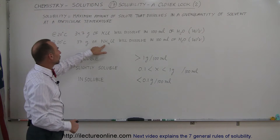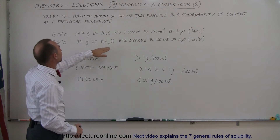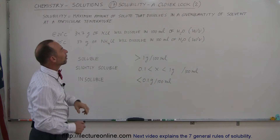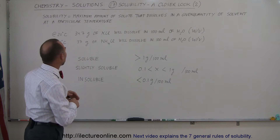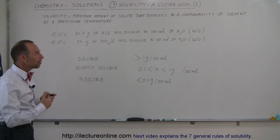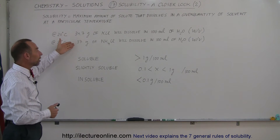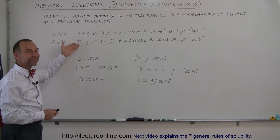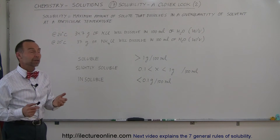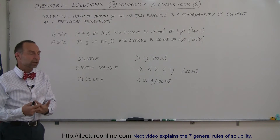And likewise, for ammonium chloride, 37 grams of ammonium chloride will dissolve in 100 milliliters of water at 20 degrees centigrade. We will learn later that at different temperatures the amount will be different, but this is a fair quantity. These will dissolve to a great extent, and a lot of solute is dissolved in just 100 milliliters of water, so we can say that those two are soluble.